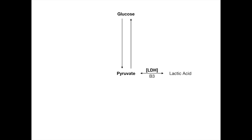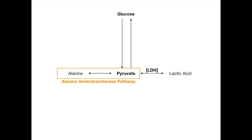The cofactor in the reaction catalyzed by lactate dehydrogenase is vitamin B3. That is the first possible pathway for pyruvate. The next possible pathway for pyruvate is being converted into alanine. This conversion is referred to as the alanine aminotransferase pathway, and the enzyme that converts pyruvate to alanine is ALT. The cofactor here is vitamin B6.